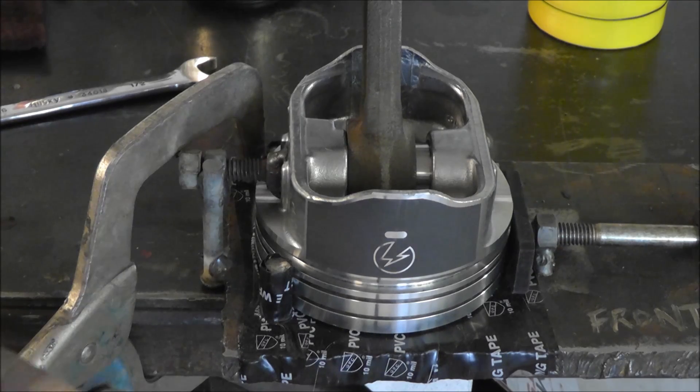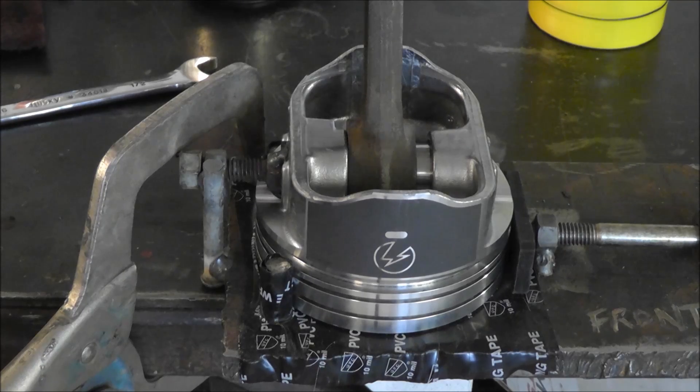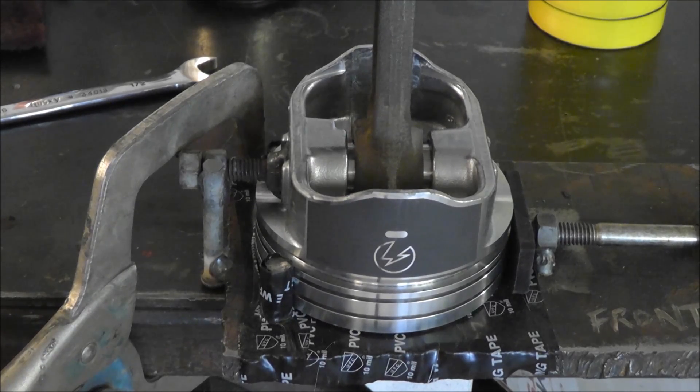See how the connecting rod is all the way over to the one side? Now when you move it over to the center, the wrist pin will be centered in the piston. That's the purpose of that little doohickey right there.